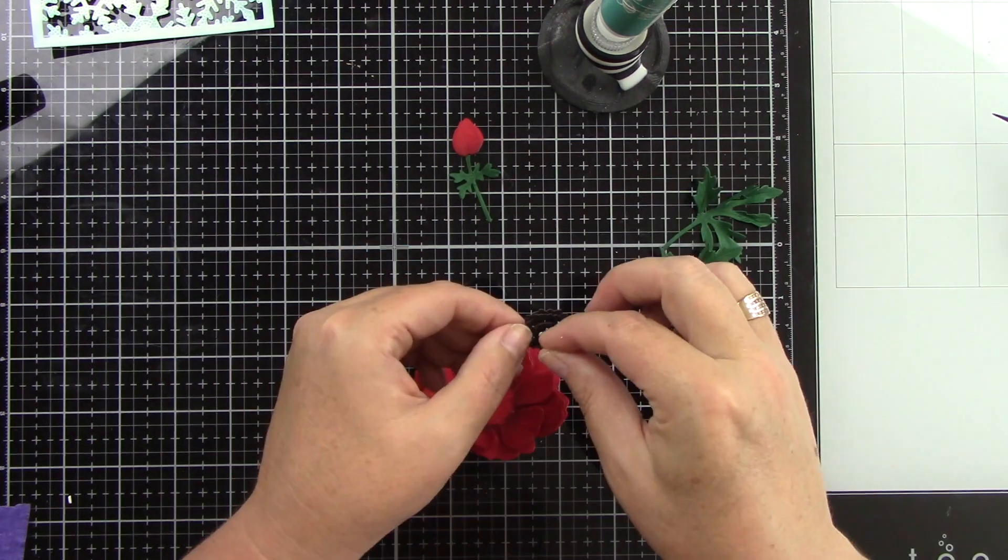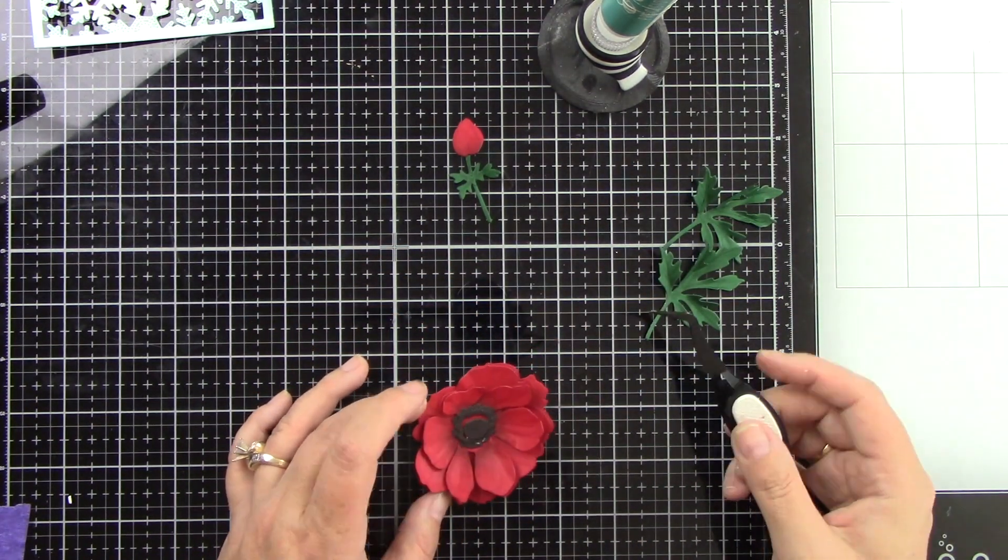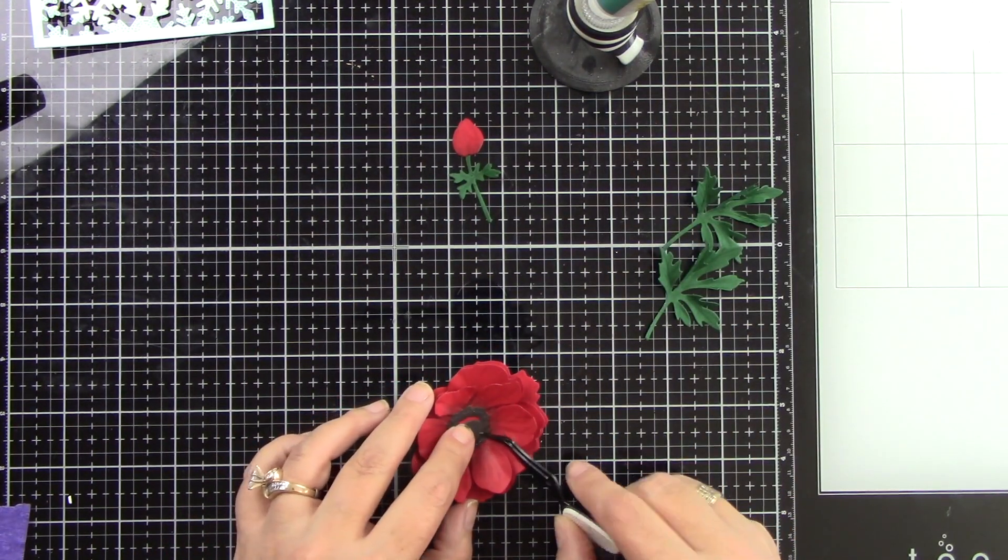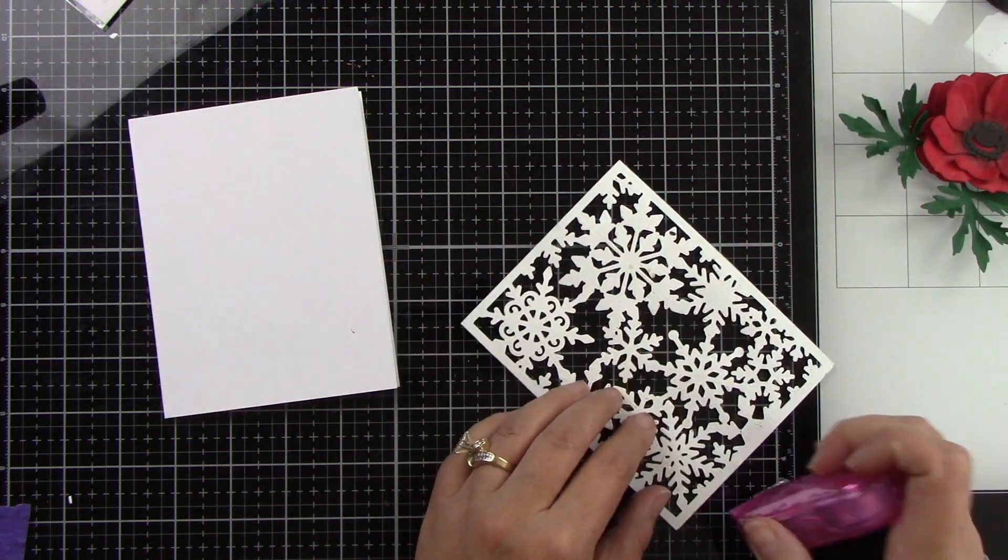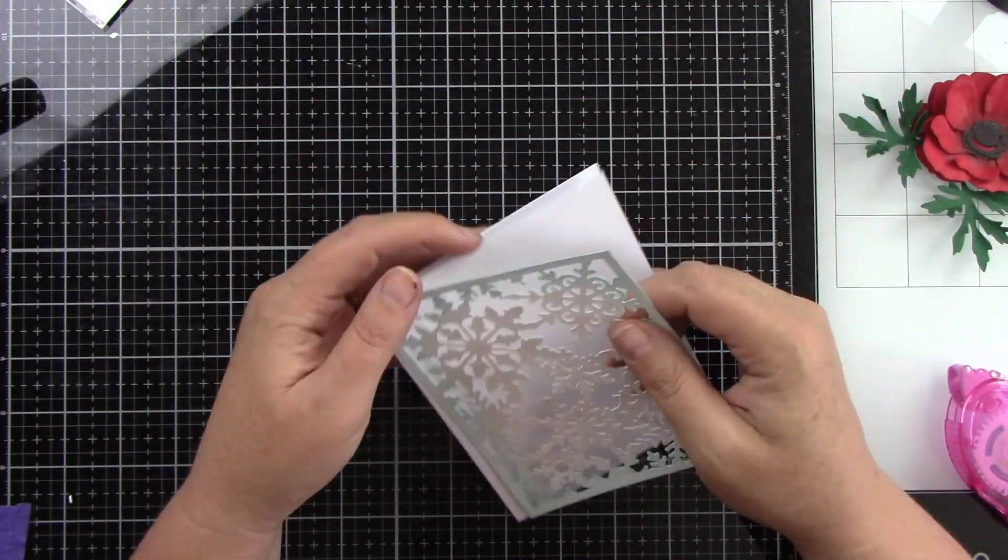I'm going to adhere the centers together, the three pieces, and then glue that to the middle of this really beautiful flower. I love this deep dark red and it's going to be so pretty against those snowflakes. I'm going to adhere this to a white A2 size card base with just a little bit of tape runner. Put that in place.